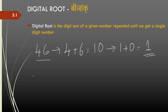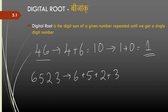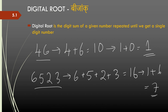Similarly, if I have another number 6523, I do the digit sum: 6 plus 5 is 11, plus 2 is 13, plus 3 is 16. I have a two digit number so I repeat again: 1 plus 6 is 7. So 7 is the digital root of 6523.